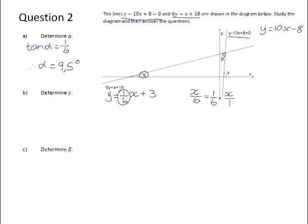If we now want to find gamma, gamma is the angle of inclination on the line y is equal to 10x minus 8. So that means that the tan of gamma will be equal to 10. And that means gamma will be equal to the shift tan of 10, which is 84.3 degrees.